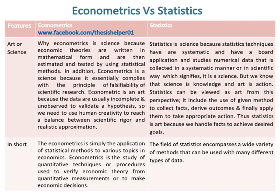Statistics is a science because its techniques have systematic and broad application, and it studies numerical data collected in a scientific manner. Science is knowledge and art is action; statistics can be viewed as art because it includes the use of given methods to collect facts, derive outcomes, and apply them to take appropriate action to achieve desired goals. Econometrics is simply the application of statistical methods to various topics in economics.